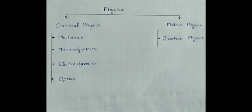We can classify physics in two parts: classical physics and modern physics. Most of classical physics was developed up to the year 1900, and most of modern physics was developed after the year 1900. That is why it is called modern physics.